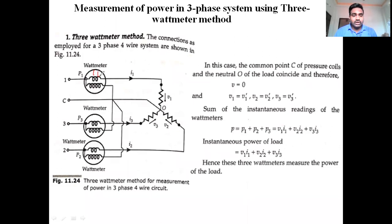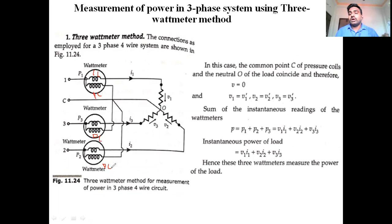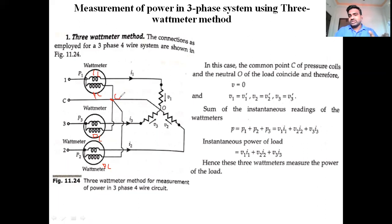All current coils are connected in series to the line. Current coil of wattmeter 1 is in series to the line, wattmeter 2 in series to the line, wattmeter 3 in series to the line. The potential coils — also called voltage elements — are connected in parallel to the line. All potential coils are connected together at a common point. This is our common point.